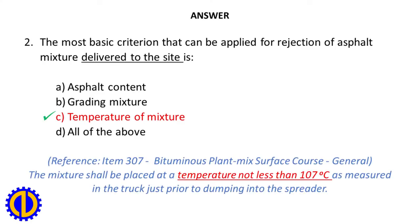Answer: C. Temperature of mixture. Reference: Item 307, Bituminous Plant Mix Surface Course, General. The mixture shall be placed at a temperature not less than 107 degrees Celsius as measured in the truck just prior to dumping into the spreader.